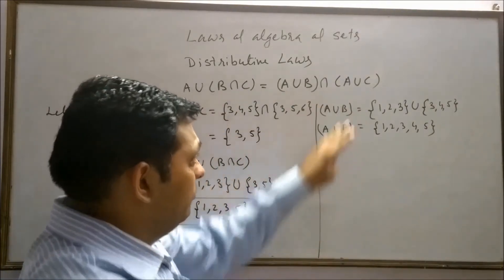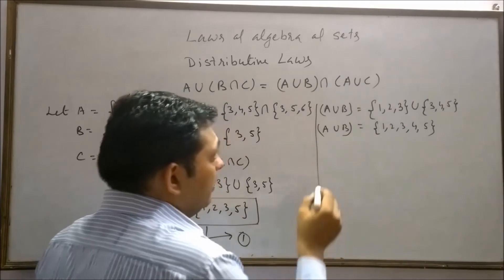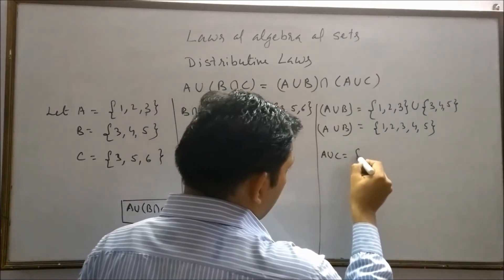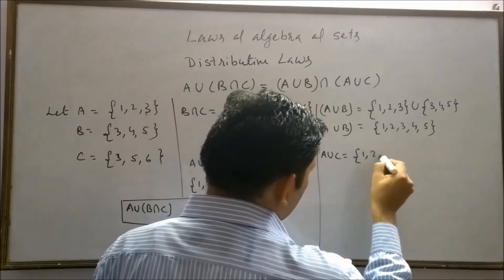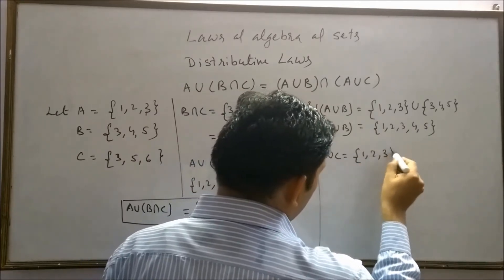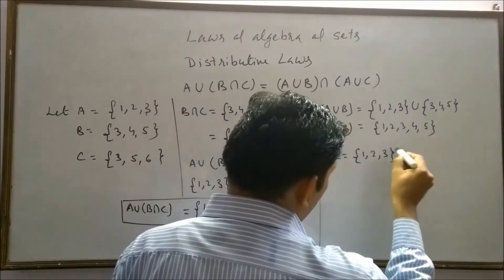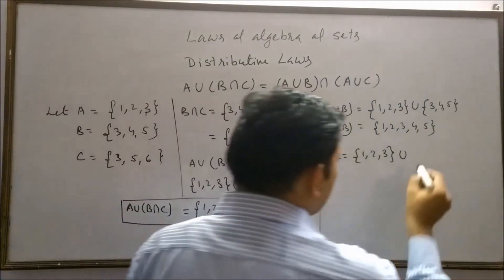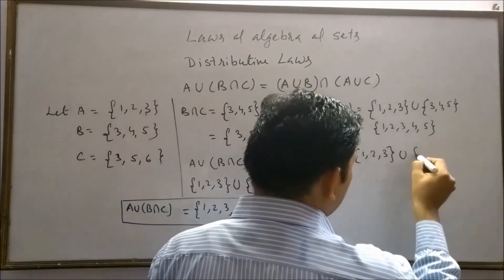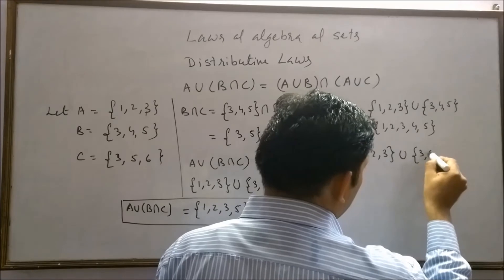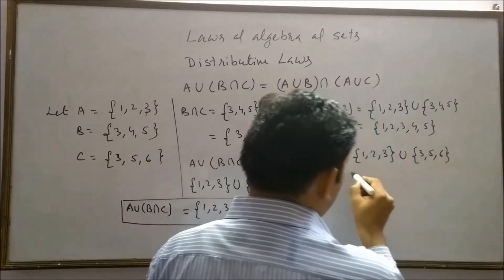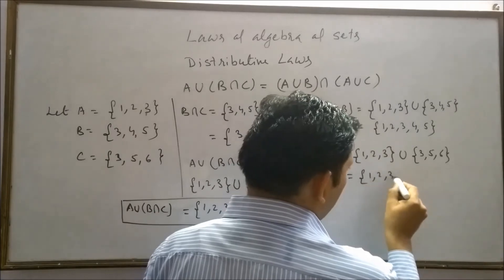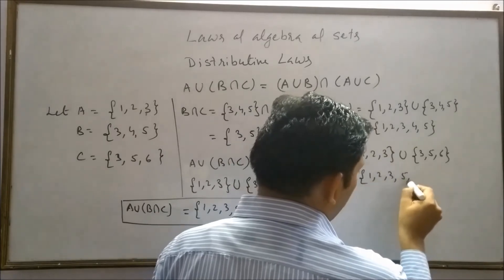Now we will find A union C. Set A = {1, 2, 3} and set C = {3, 5, 6}. Therefore, A union C = {1, 2, 3, 5, 6}.